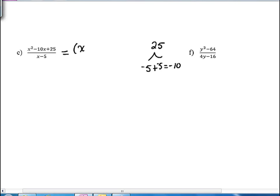This will factor as x minus 5 times x minus 5, and it's being divided by x minus 5. So the x minus 5s cancel, and we're just left with one of the x minus 5s.